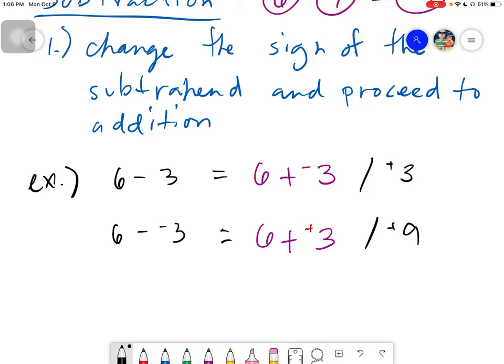So again, you change the sign. Let's have another example. Negative 7 minus negative 2. So the rule again, we change the sign. So this would simply be negative 7, same. What you change is just the subtrahend. So that becomes positive 2.